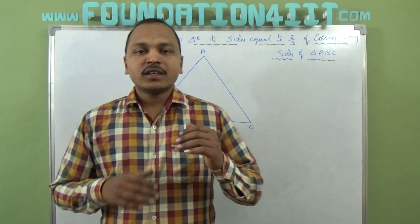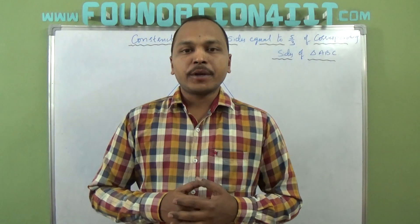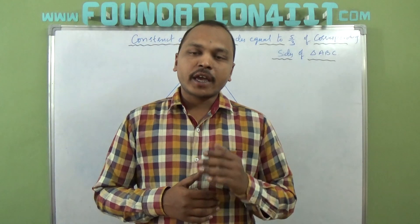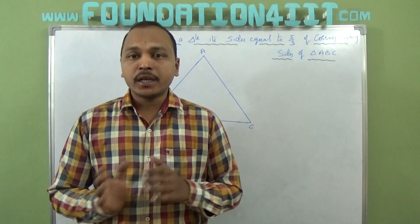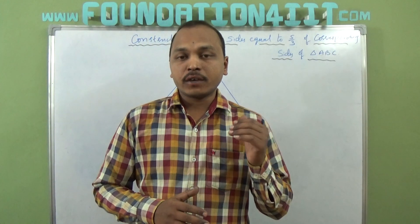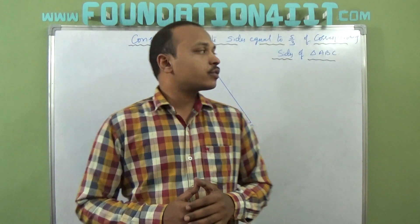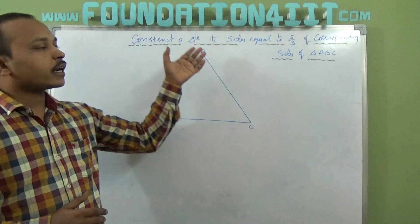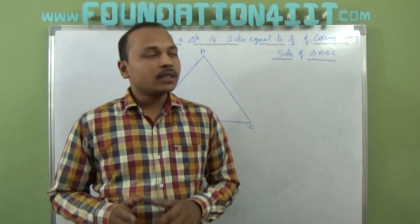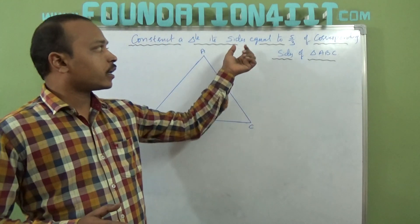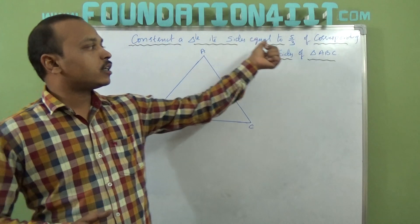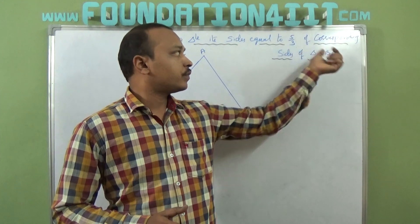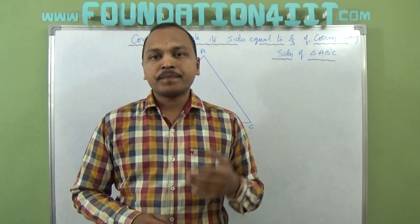Welcome to educational channel. In this video I will explain how to construct a triangle which is similar to the given triangle in the given ratio. The task is to construct a triangle which is exactly similar to triangle ABC but with sides equal to 5/3 of the corresponding sides of triangle ABC.